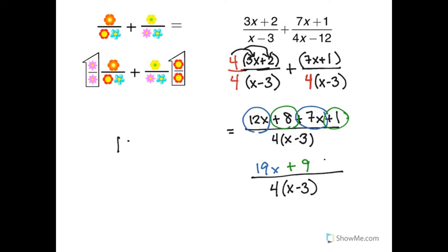The whole fraction is now 19x plus 9 over 4 times x minus 3, and that's the answer.